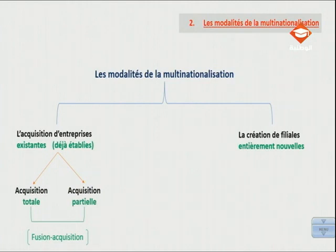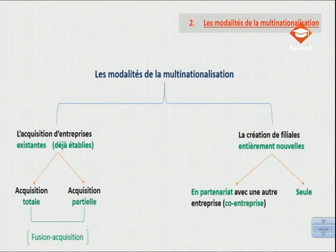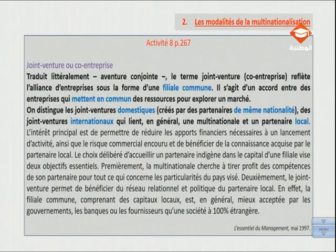Pour ce qui est du deuxième cas, la création de filiales entièrement nouvelles, il y a deux sous-choix. Soit l'entreprise crée cette filiale seule, et à ce moment-là elle va en assurer seule le financement et le risque commercial. Soit elle crée cette filiale en partenariat avec une autre entreprise, ce qu'on appelle en co-entreprise ou en joint-venture. On va voir maintenant ce qu'est cette co-entreprise, ce qu'est un joint-venture.